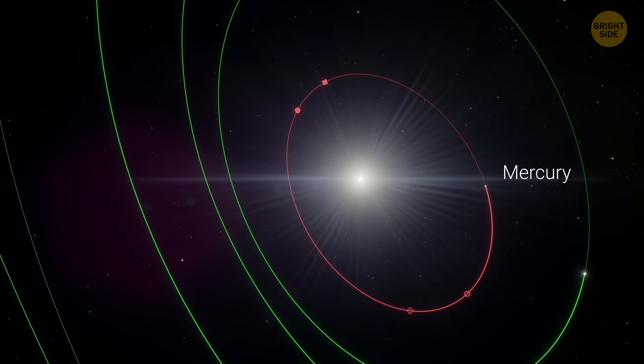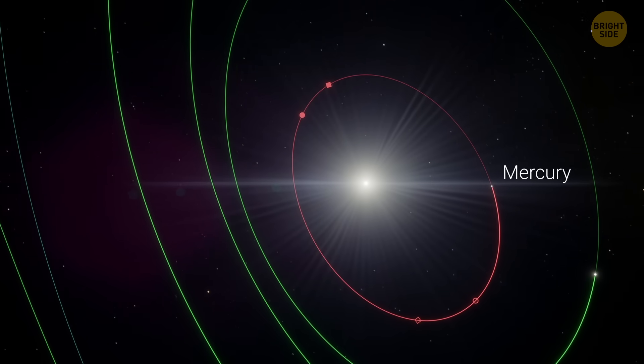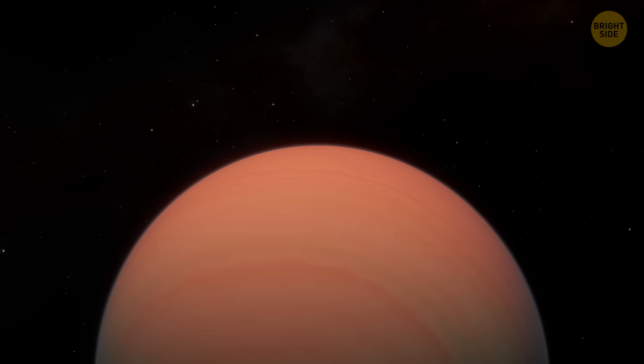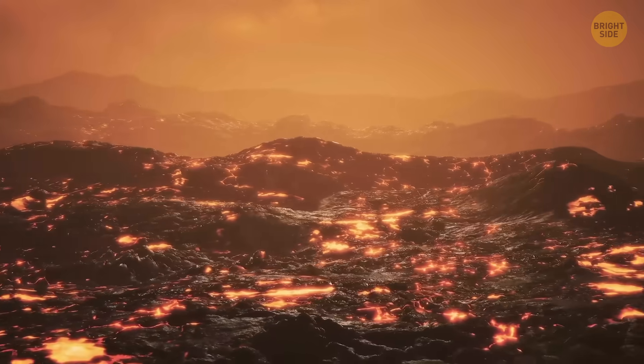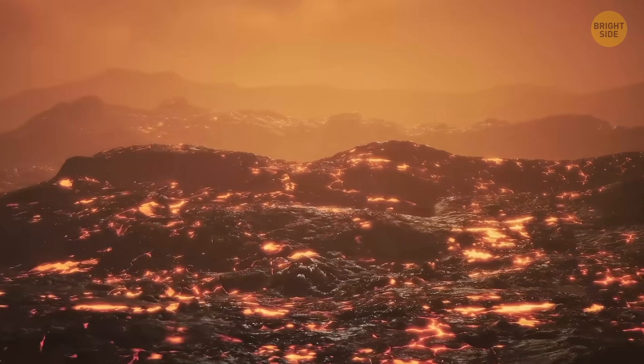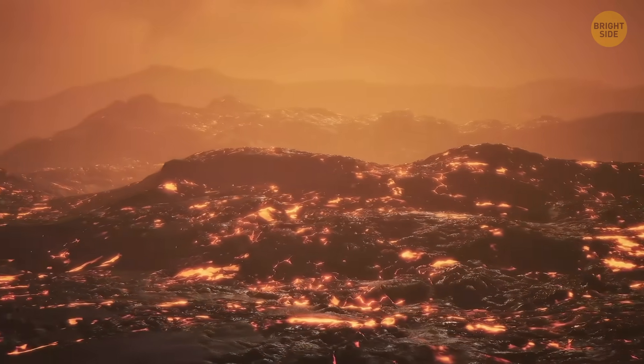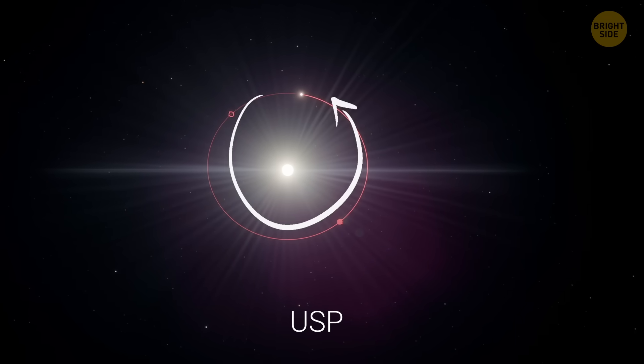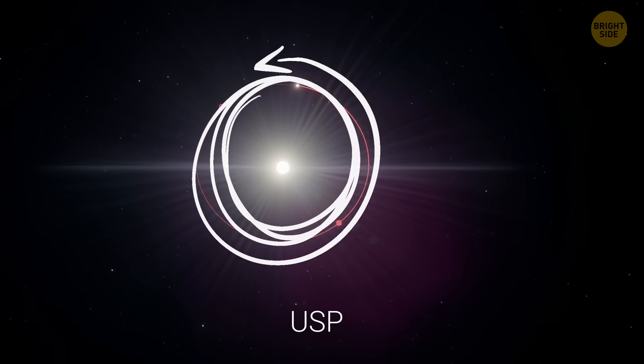The distance to its star is way closer than Mercury is to the Sun. That's why its surface is cooked at around 2000K. And that's hot enough to melt rock. Because of its extreme orbit, scientists labeled it an ultra-short period, USP, Earth-sized exoplanet, one of the shortest period worlds we've ever found.